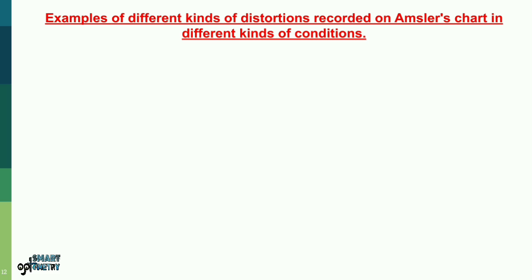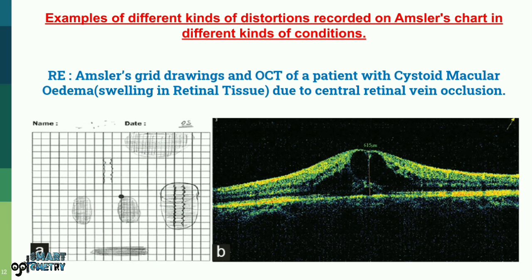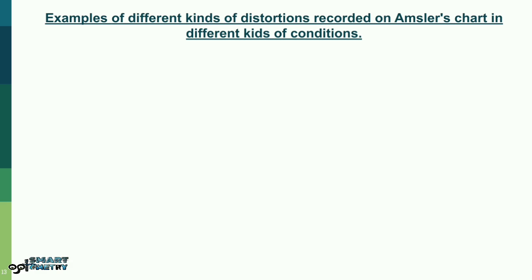Let us now look at examples of different kinds of distortions recorded on Amsler's chart in different conditions. Here you can see a patient's Amsler's chart findings for the right eye — Amsler's grid drawings and OCT of a patient with cystoid macular edema, that is swelling in the retinal tissue due to central retinal vein occlusion.